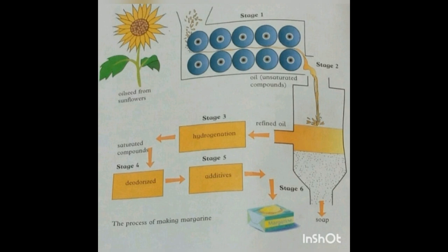Stage three is hydrogenation. In this process, the purified oil is heated with hydrogen gas in the presence of a catalyst. A catalyst is a chemical that speeds up a reaction. After hydrogenation, in stage four, the saturated compound undergoes deodorization — it is heated to remove any unpleasant smell from the fat.